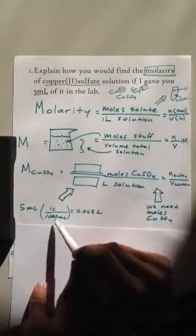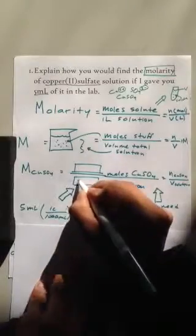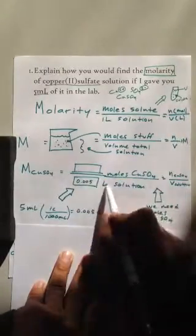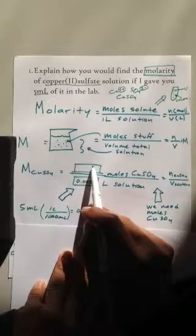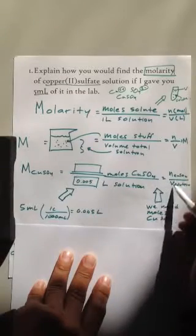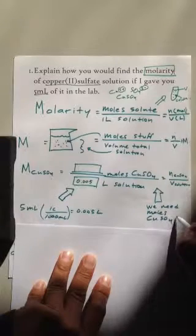If I knew that 5 milliliters is 0.005 liters, because I converted it using a conversion factor, it's basically divided by 1,000. That will give me this number here, 0.005 liters. To find the molarity, all I need now is the moles of copper sulfate. So I need to find these moles of copper sulfate divided by the volume of the solution, and that will give me the molarity.